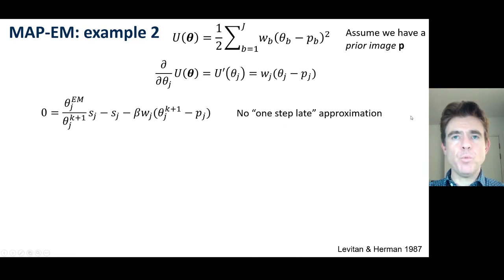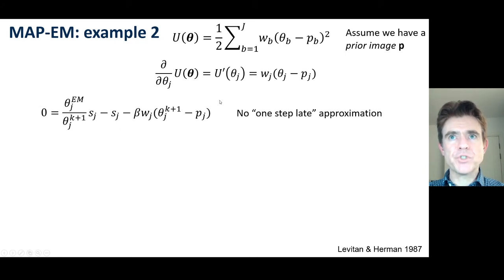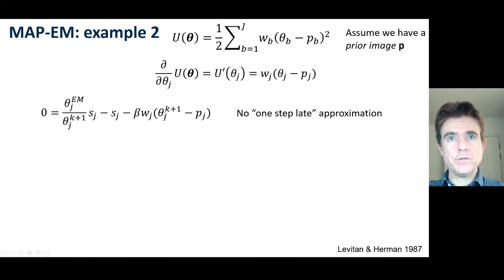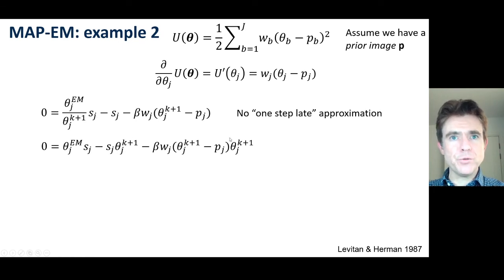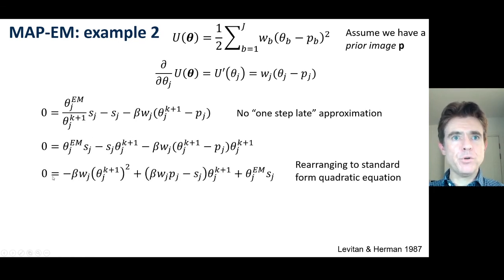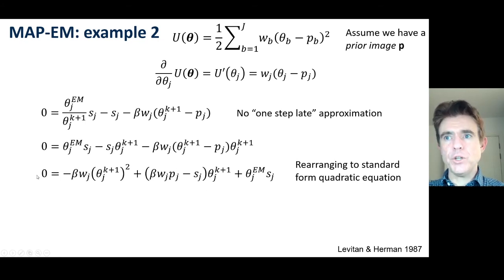Because of the simplicity of that, we do not need the one-step-late approximation. This expression looks much like before, but now we've substituted in explicitly for the partial derivative of u, evaluated crucially at the estimate we need to find, theta_{k+1}. We rearrange by multiplying by theta_{k+1} to put it in the form of a standard quadratic equation.